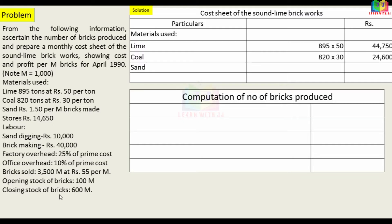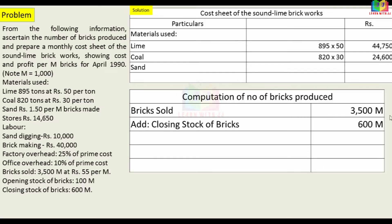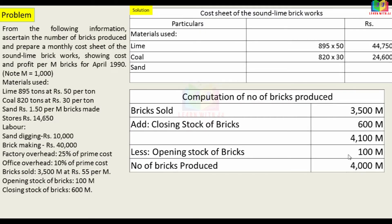We add the closing stock of bricks to the bricks sold, then subtract the opening stock to get units produced. Bricks sold is 3,500 M. Add closing stock 600 M — that gives 4,100 M. Minus opening stock 100 M — so the number of bricks produced is 4,000 M.